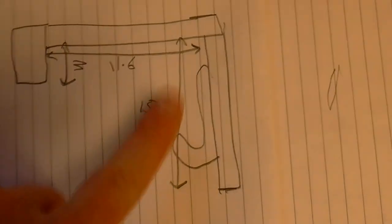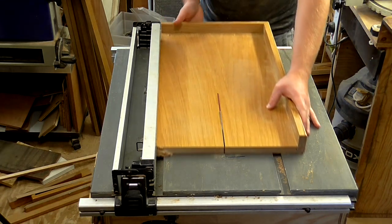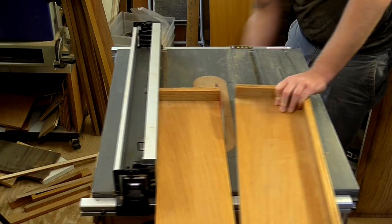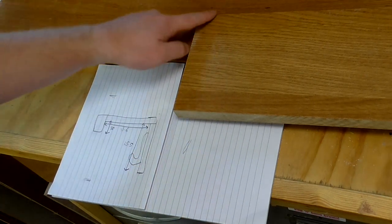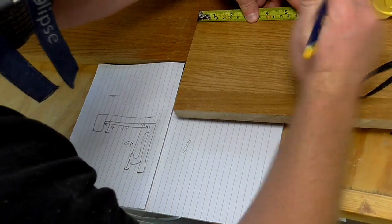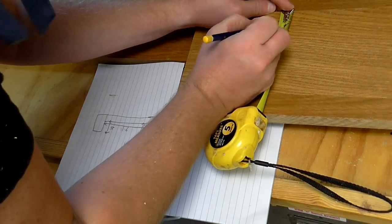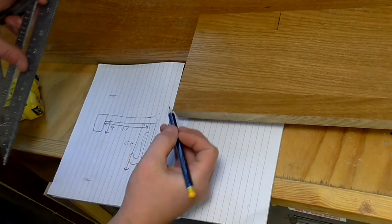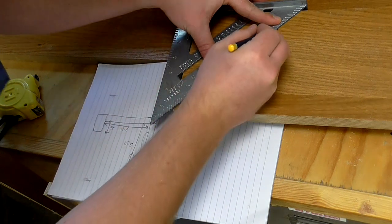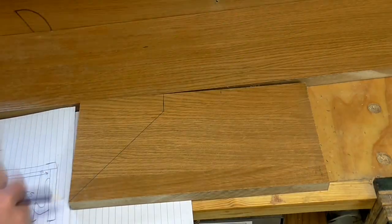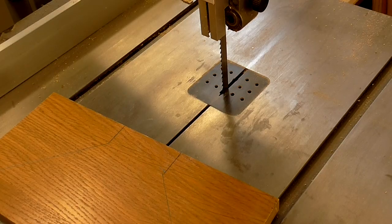The table saw is still set at 15.5 centimeters so I'll rip another strip. And now I can mark up the other dimensions onto this piece. So this is the 15.5, here's the 11.6, and here's the 3 centimeters. And I'll join this corner with this mark. Now I can cut out those shapes on the bandsaw.